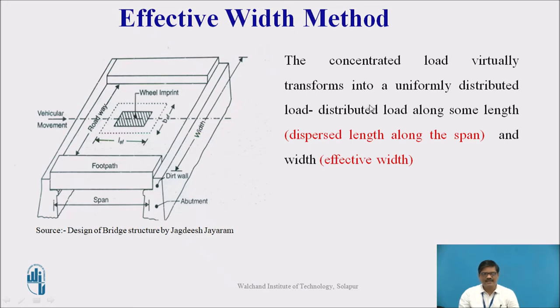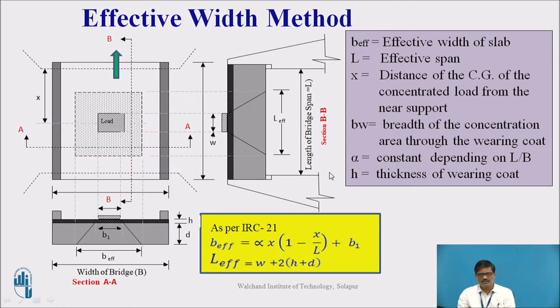And that we call it as L Effective and B Effective. The concentrated load vertically transforms into a uniformly distributed load distributed along some length. That we call dispersed length along the span.